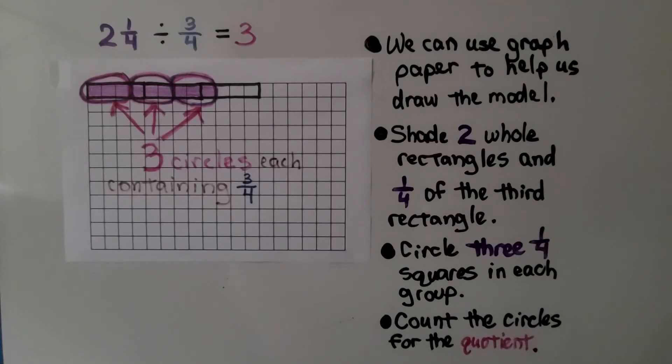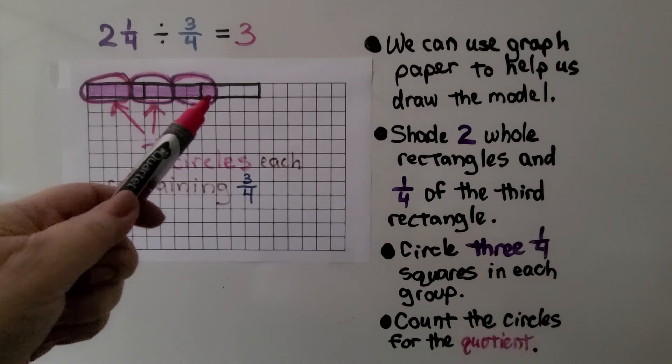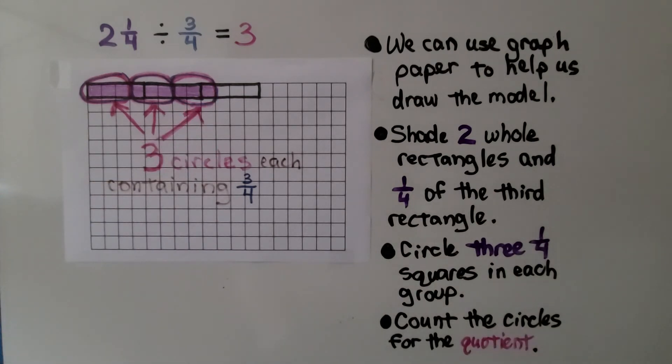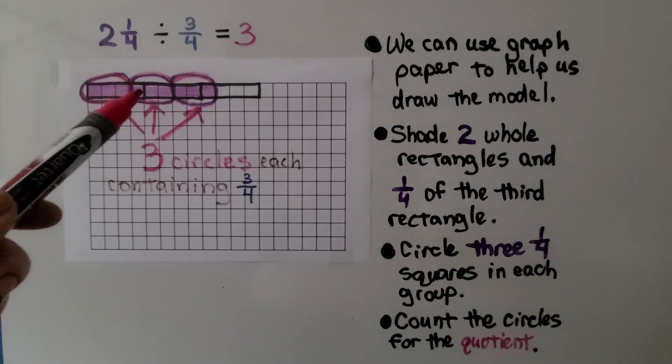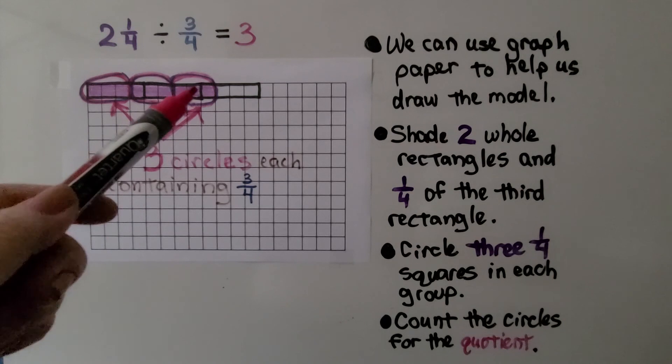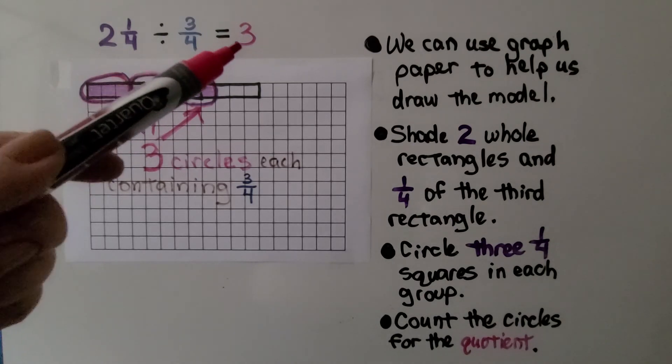We can use graph paper to help us draw the model. We shade two whole rectangles and one-fourth of a third rectangle. We circle three one-fourth squares. One, two, three. That's one circle. These are each a fourth. One, two, three. That's another circle. And one, two, three. So each of these circles contain three-fourths. We count the circles for the quotient. We have three circles, each containing three-fourths. The quotient is three.